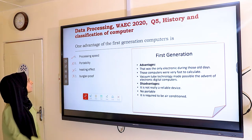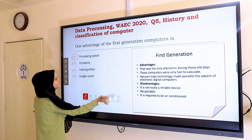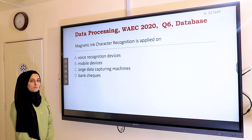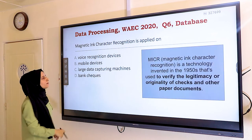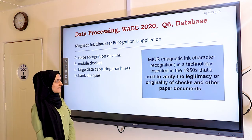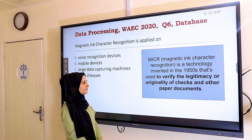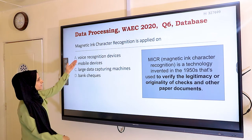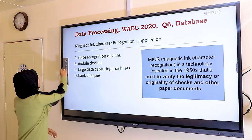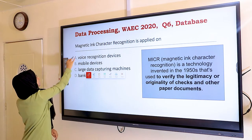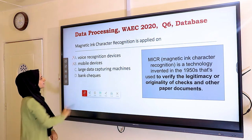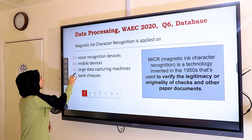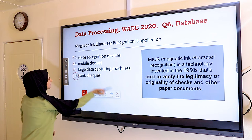Question six: magnetic ink character recognition (MICR) is applied on what? MICR is a technology invented in the 1950s used to verify the originality of checks and other paper documents. Voice recognition devices, mobile devices, and large data capturing machines are not applicable. The answer is D — bank checks.